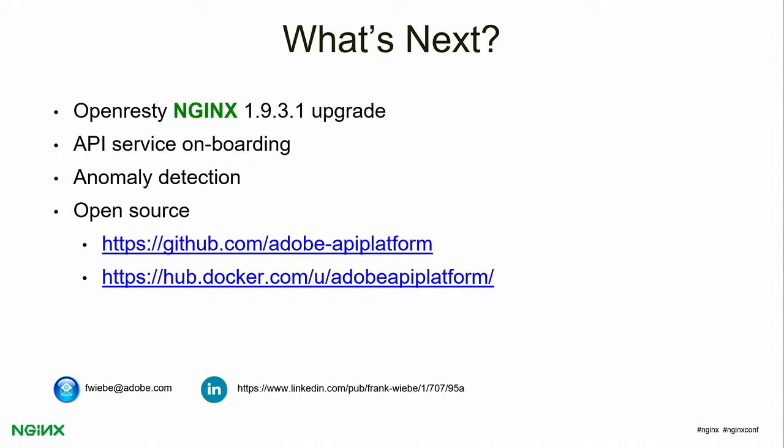What's next: we're looking to upgrade to OpenResty, the NGINX 1.9.3.1, later this year, continuing with API service onboarding and anomaly detection. We are now starting to open-source components of our platform — right now we've open-sourced the actual gateway itself, available both as code and as a Docker container. One of my colleagues, Dragos, will be talking later this afternoon about our experimentation with Docker and Mesos, not only for microservices behind the gateway but for the gateway itself. So with that, thank you for your time and attention this morning.